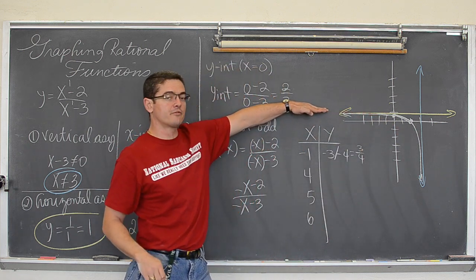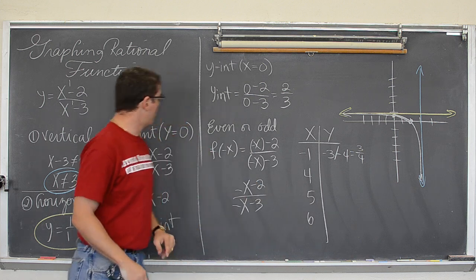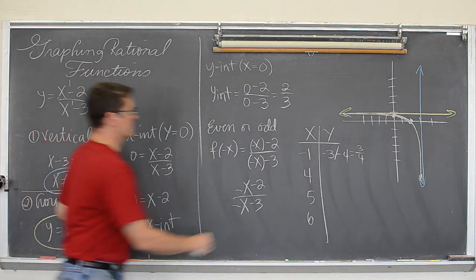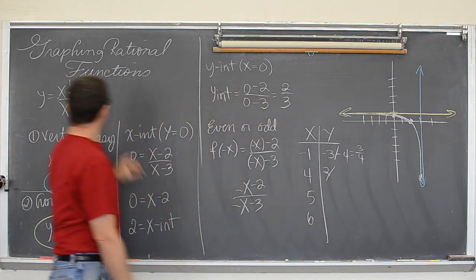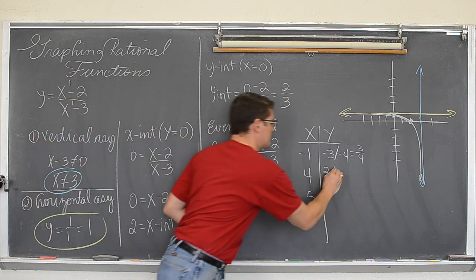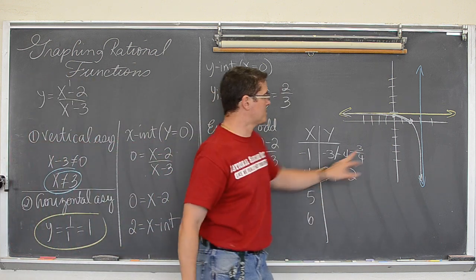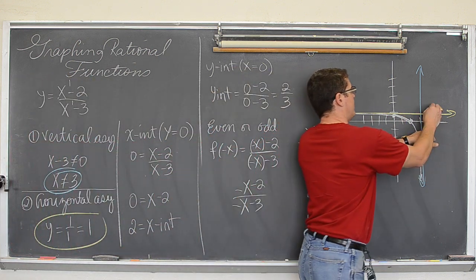And then at 4 we have 4 minus 2 which is 2. 4 minus 3 which is 1. So that is 2. So at 4 we are at 2. 1, 2, 3, 4. We are at the y value of 2.